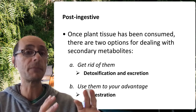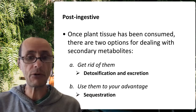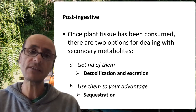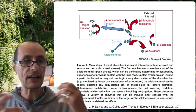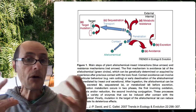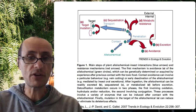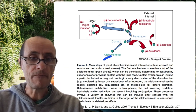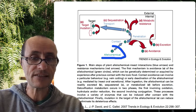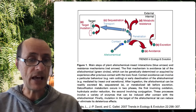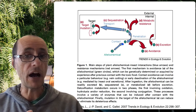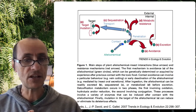You put them aside without getting them out of your body. Let's take a look at these in turn. This is a really nice schematic that outlines the various ways in which allelochemicals or these plant secondary metabolites can come in. They first have to come into contact with insect tissue.